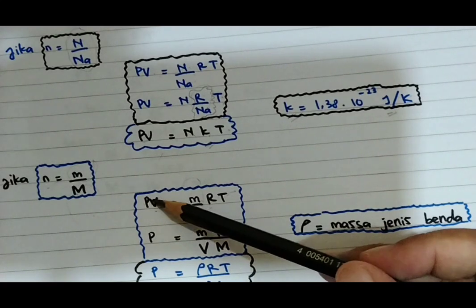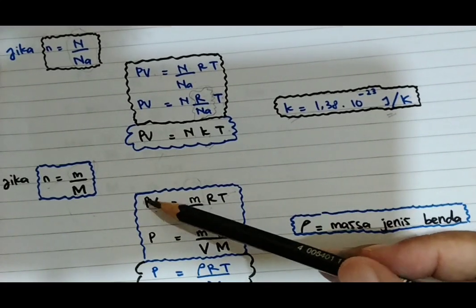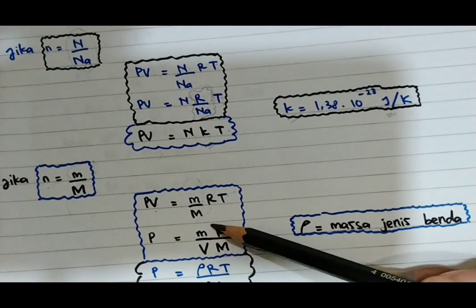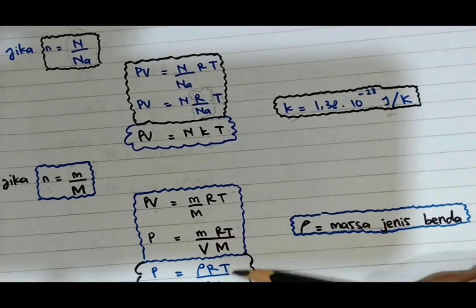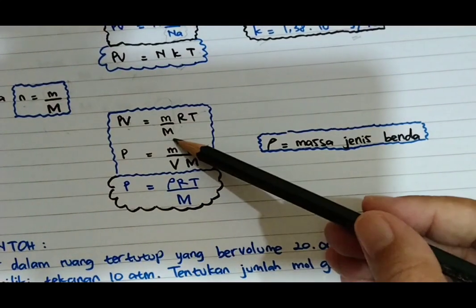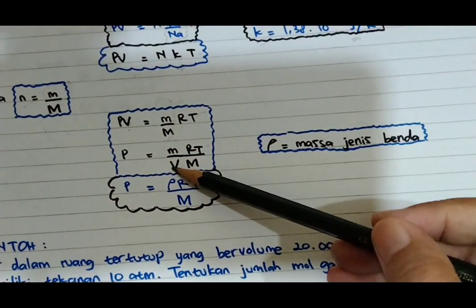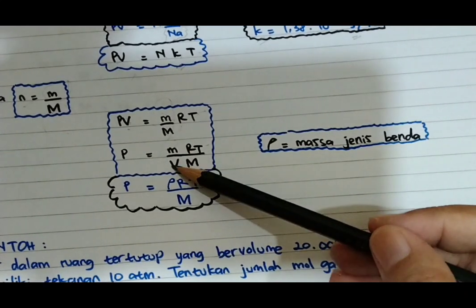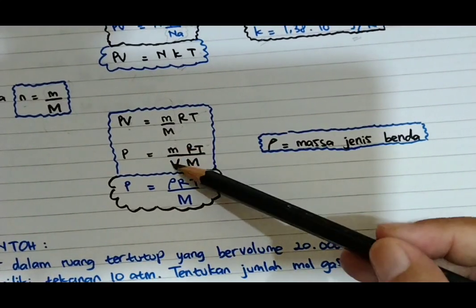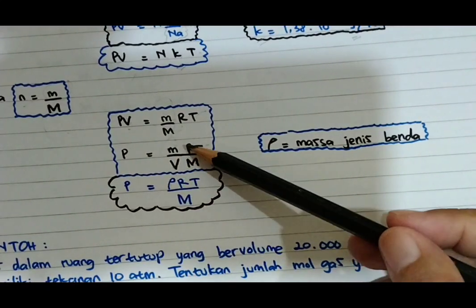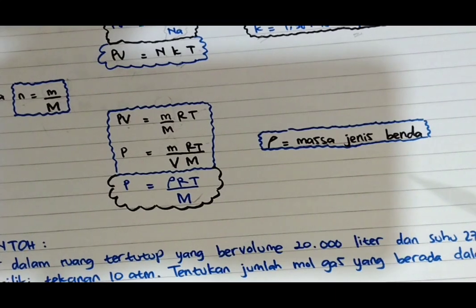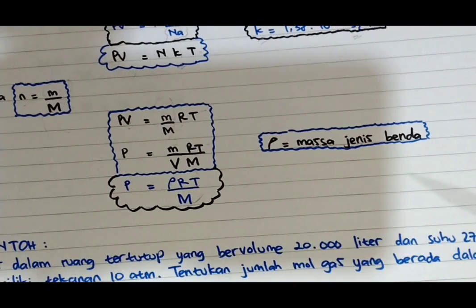Dari sini V kita turunkan sehingga P menjadi di bawah dan VM ada di atas, menghasilkan P = MRT/(M_r × V). Ternyata di sini ada massa per volume — kita tahu dari kelas 10 bahwa massa per volume merupakan massa jenis benda dengan simbol Rho. Dari sini kita bisa ubah menjadi P sama dengan Rho × R × T per M_r.